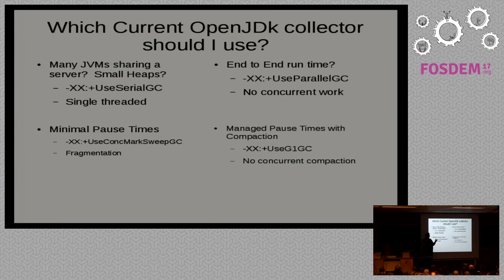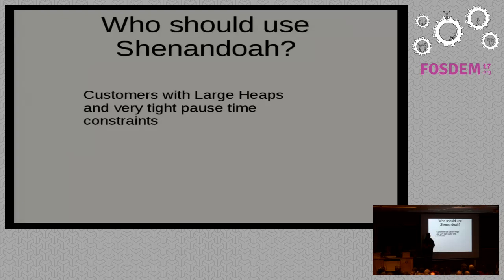For some folks, these aren't enough. They have a heap that's too large and pause time constraints that are too small. Those are the folks we aimed Shenandoah at — people that want to run 100 or 200 gigabyte heaps, but still have to respond to things in 10 milliseconds. If a request gets stalled because of a GC for a minute, they've violated all kinds of quality of service guarantees.